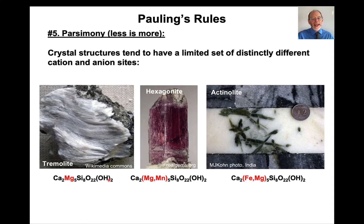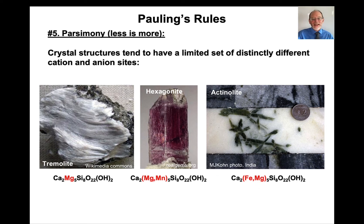Here are amphiboles with different substitutions into the octahedral sites. Pure magnesium forms the mineral tremolite; a mixture of iron and magnesium forms actinolite — similar to how forsterite is magnesium olivine and olivine is mixed iron-magnesium. Hexagonite is a manganese-rich version of this amphibole. It's all the same structure, just different chemical substitutions into these octahedral sites.